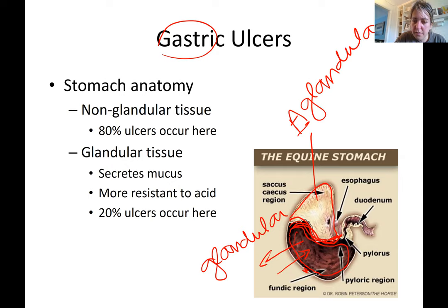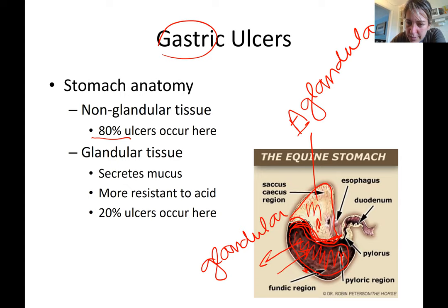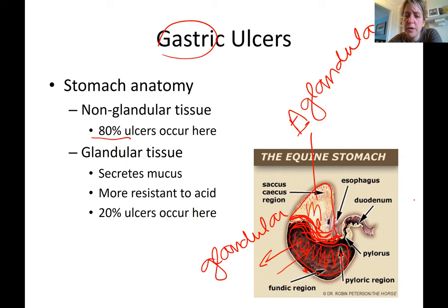The glandular part is covered in mucus and protected from gastric juices. The aglandular part is not, so the great majority of gastric ulcers occur in the aglandular part — mainly at the lining where the aglandular joins the glandular. The esophagus enters here, and the duodenum exits on the other side.